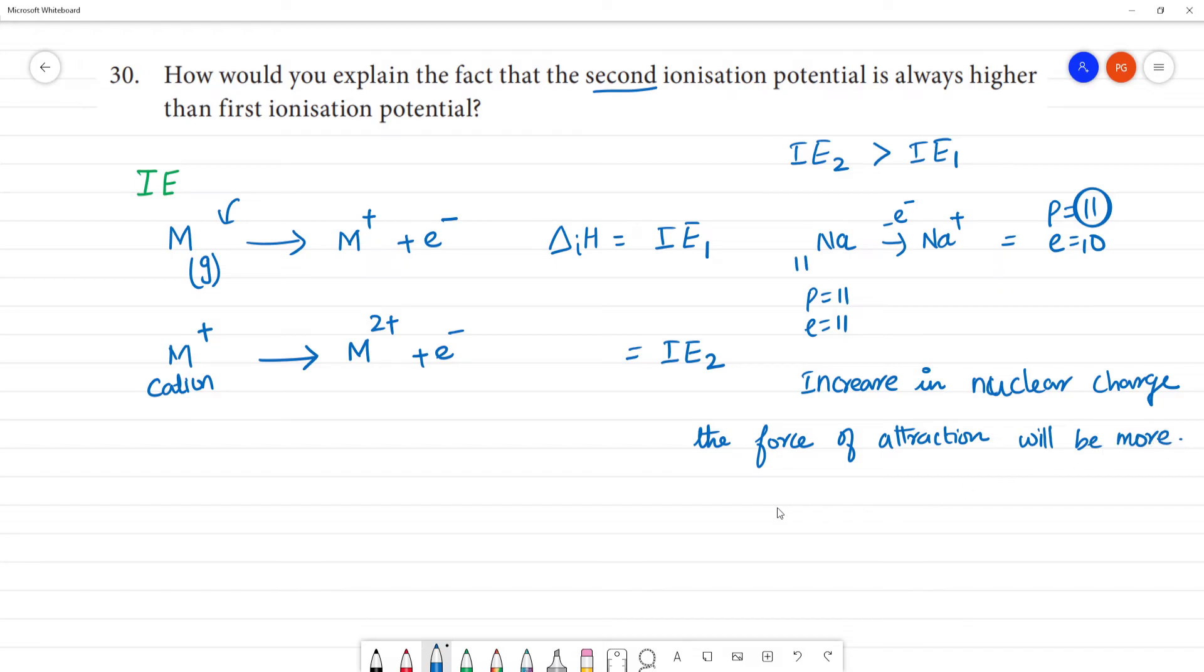So we have to supply more energy. More energy should be supplied to remove successive electrons. So the ionization energy IE₂, that is second ionization energy, is always higher than the first ionization energy. In this case we have to supply more energy than the first ionization energy.